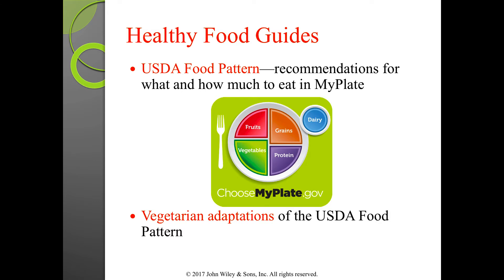Looking at MyPlate, you can see the wide variety of colors necessary in the diet. Protein is no longer the centerpiece but rather a side dish — it's one-fourth of the plate. Carbohydrates, encompassing fruits, vegetables, and grains, should make up the majority of food. Vegetables take center stage, fruit is very important, at least half of grains should be whole grains, and it's important to get dairy in every day. Each food group provides certain nutrients you can't get from other groups, which is why a varied diet matters.